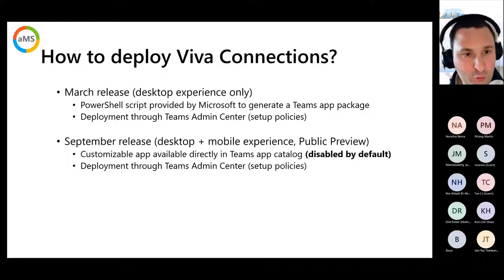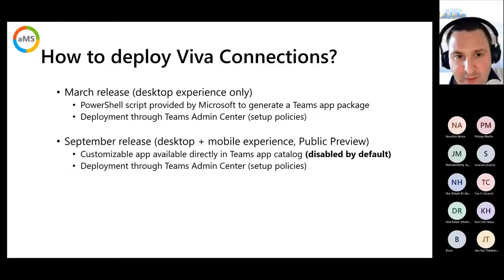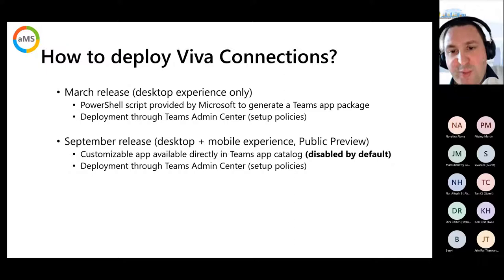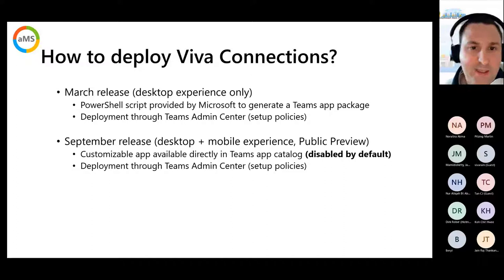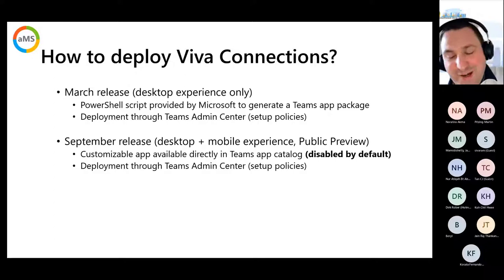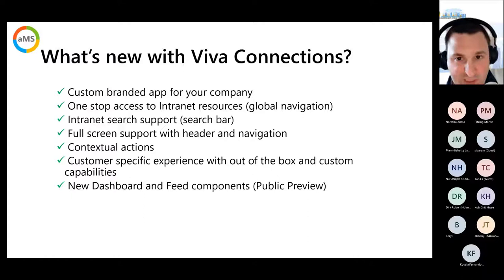How to deploy Viva Connections: there are two ways. The old way — the March release — was desktop-only; Microsoft provided a PowerShell script to generate a Teams app package which you deployed via the Teams Admin Center setup policies. Now, if you have a targeted tenant, you can use the desktop and mobile experience directly from the Teams app catalog. It's disabled by default — just enable the app and publish it to users via setup policies.